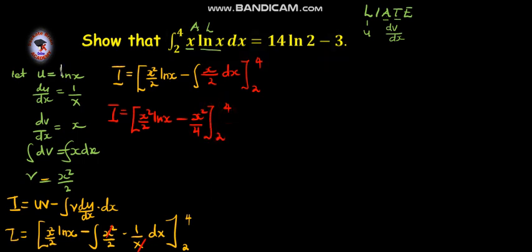Now, the next step is to put in the limits. We shall say our I is equal to, now we're substituting for x equals 4. That is 4 squared over 2, ln 4, minus 4 squared over 4.